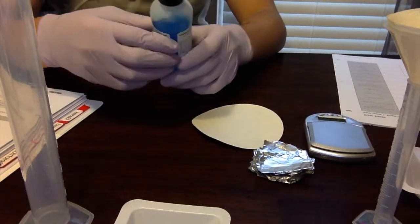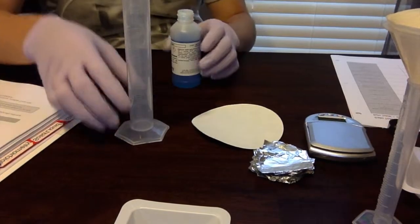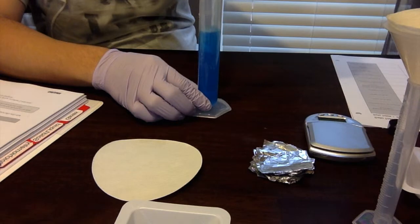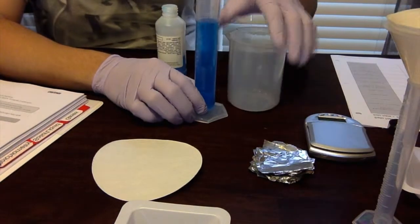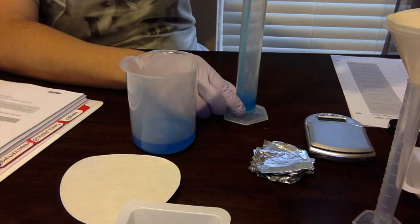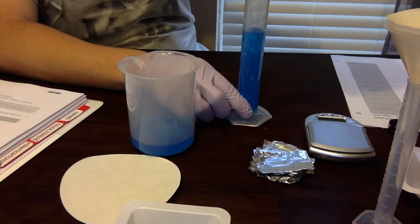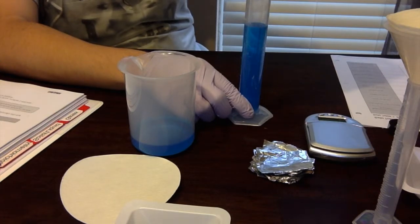First we're going to start by measuring off how much copper sulfate we have. So we're going to use our graduated cylinder. All right, that's 50 milliliters, and we're going to place this in the 250 milliliter beaker. All right, let's measure off the rest.